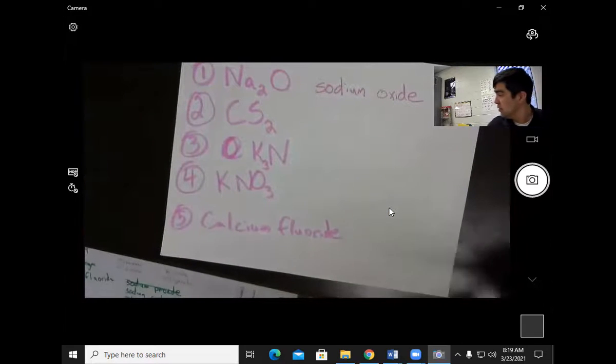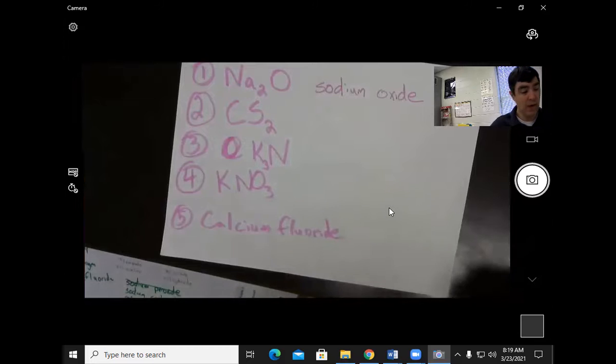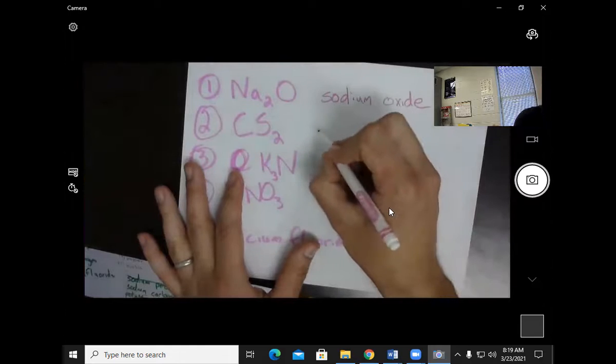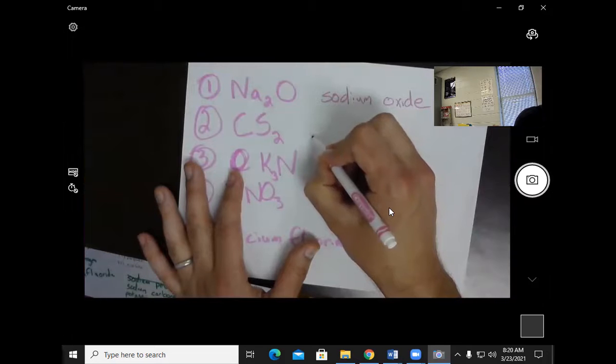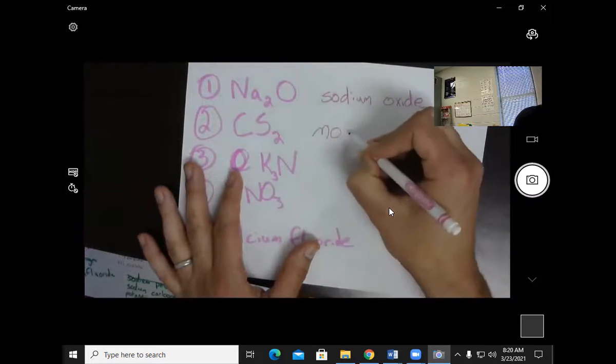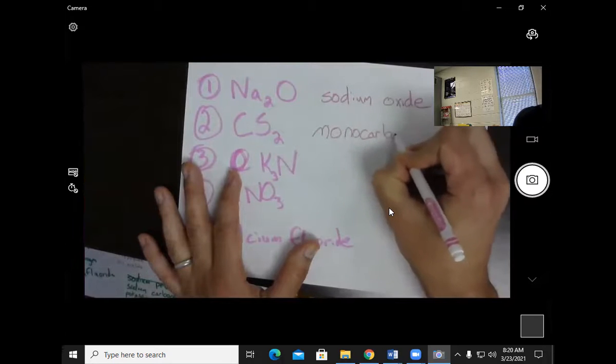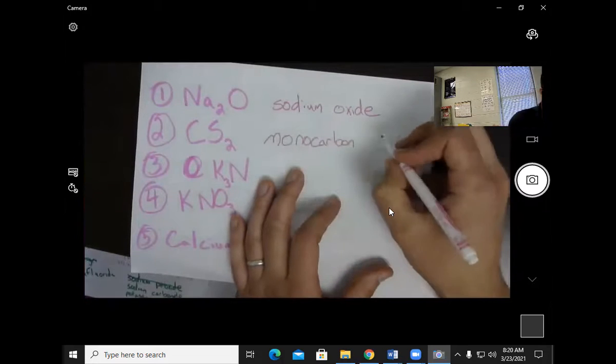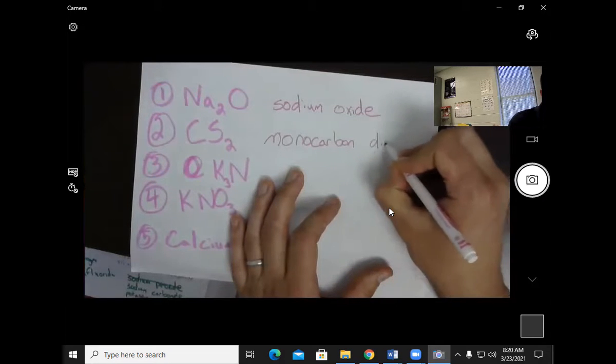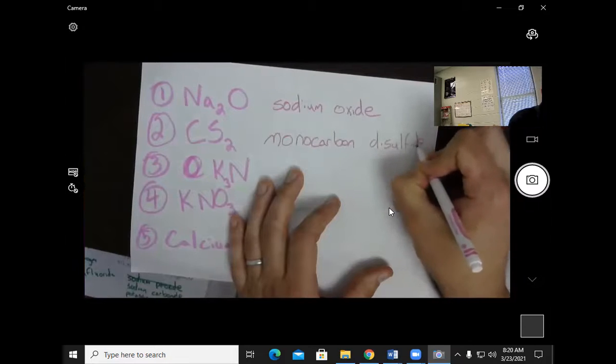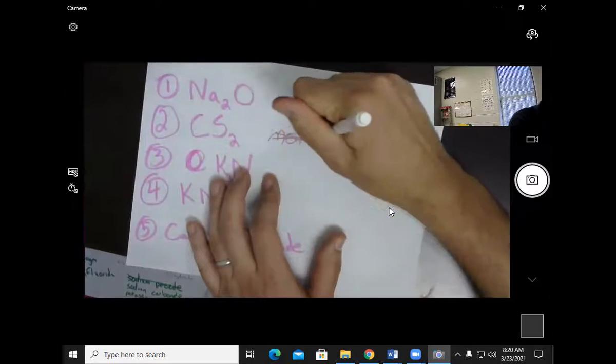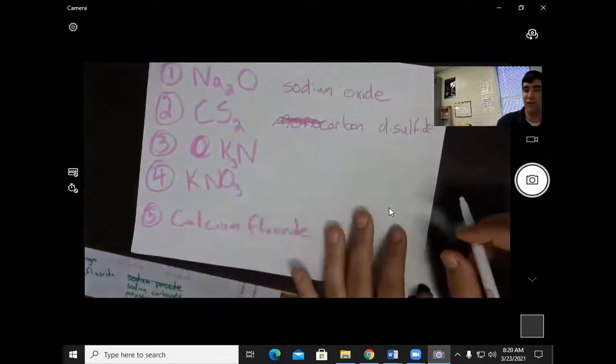Will I use prefixes? I will use prefixes with covalent compounds. So I'm going to call this carbon. It's actually how many carbons? It's one carbon, monocarbon. And there's how many sulfurs? Two. So it's called disulfide. Now, remember, if mono is on the first word, you take it off. So it's just called carbon disulfide.